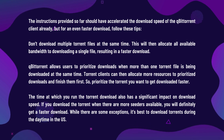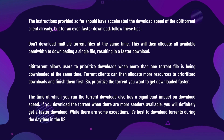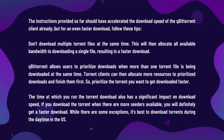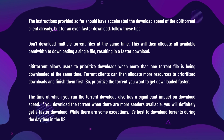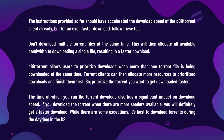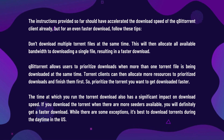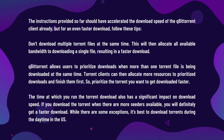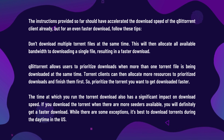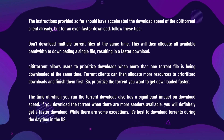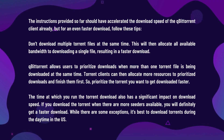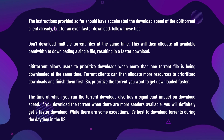qBittorrent allows users to prioritize downloads when more than one torrent file is being downloaded at the same time. Torrent clients can then allocate more resources to prioritized downloads and finish them first, so prioritize the torrent you want downloaded faster. The time at which you run the torrent download also has a significant impact on speed — if you download when there are more seeders available, you will get a faster download. While there are some exceptions, it's best to download torrents during the daytime in the US.